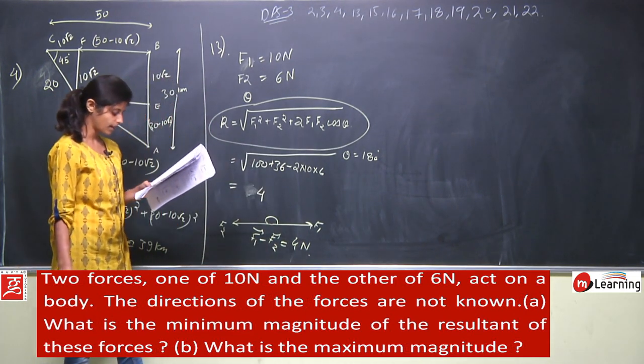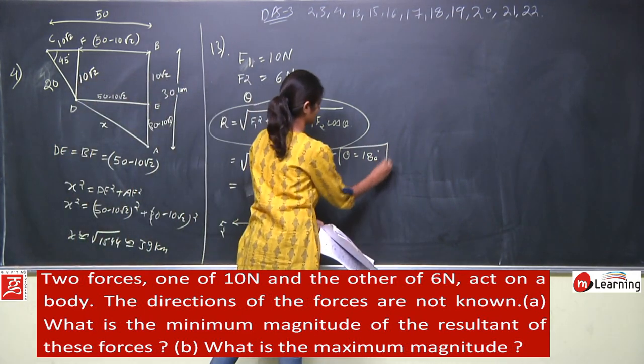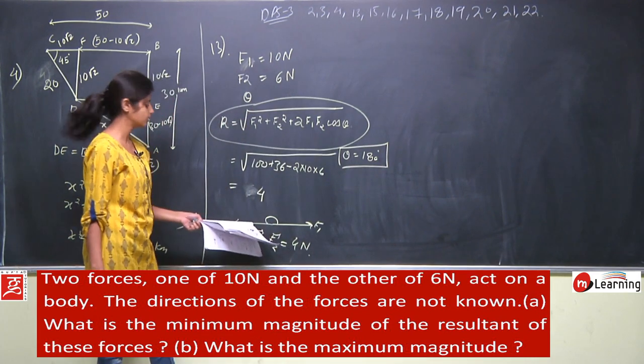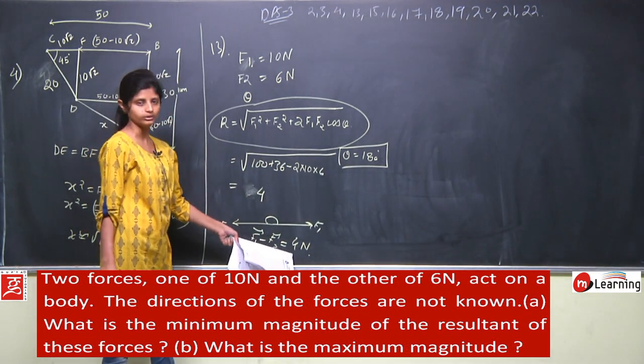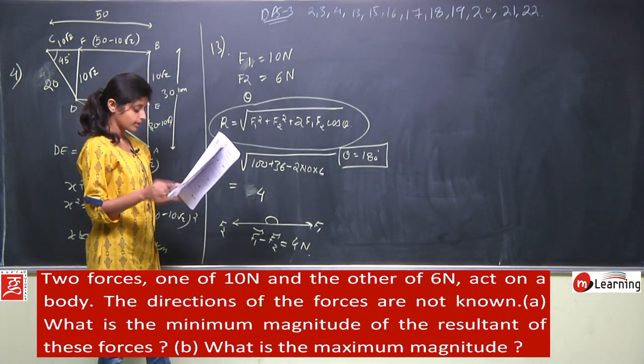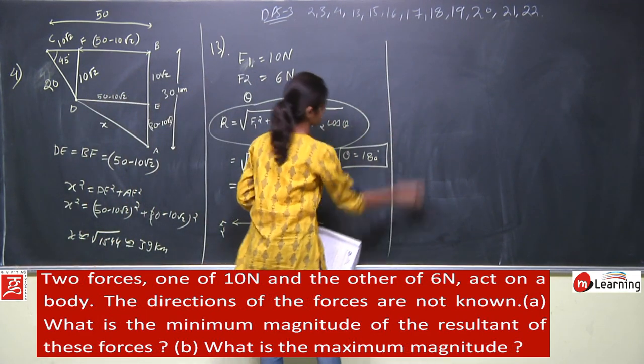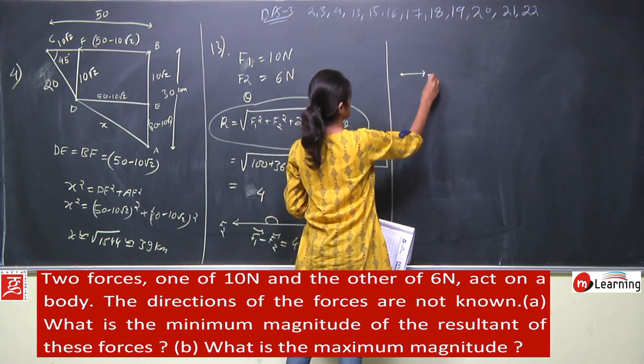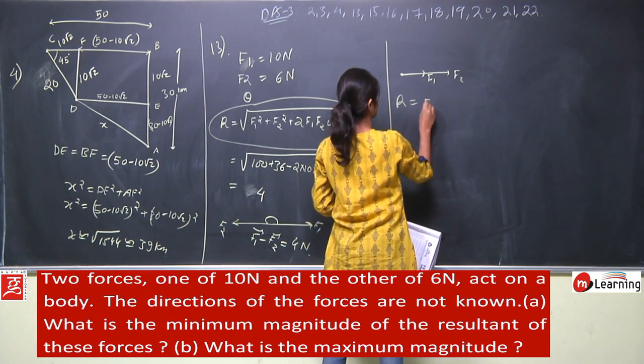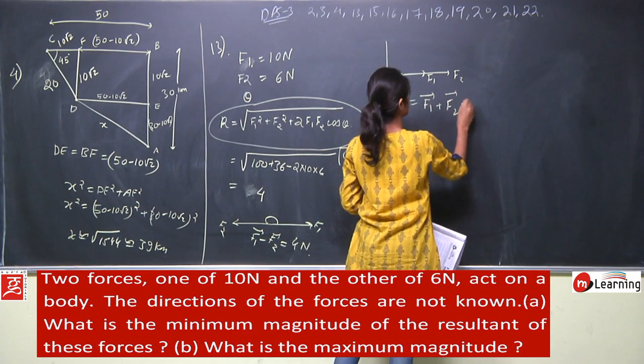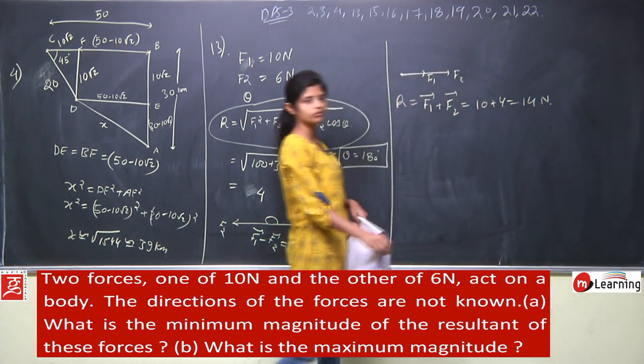Part B: what is the maximum magnitude? The magnitude will be 4 and theta will be 180 degrees. You get this value when the angle between these two forces is 180 degrees, and that minimum value will be 4 Newton. What is the maximum magnitude? Maximum occurs when both forces are in the same direction. F1 in this direction and F2 also in this direction. So resultant is vector F1 plus vector F2, that equals 10 plus 6, that is equal to 16 Newton. The maximum value will be 16 Newton.